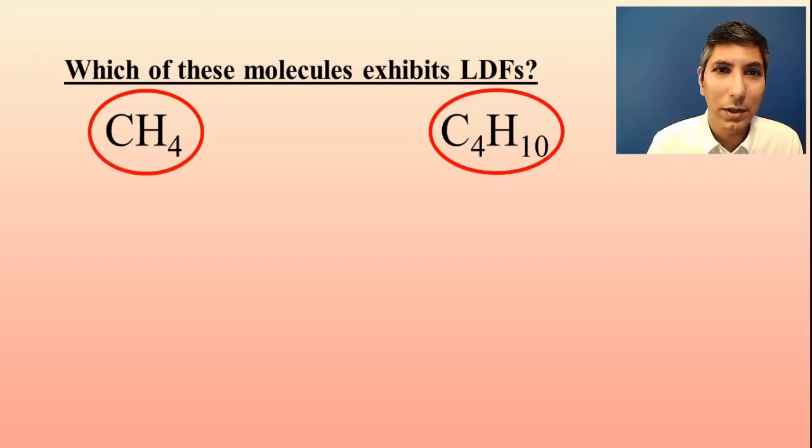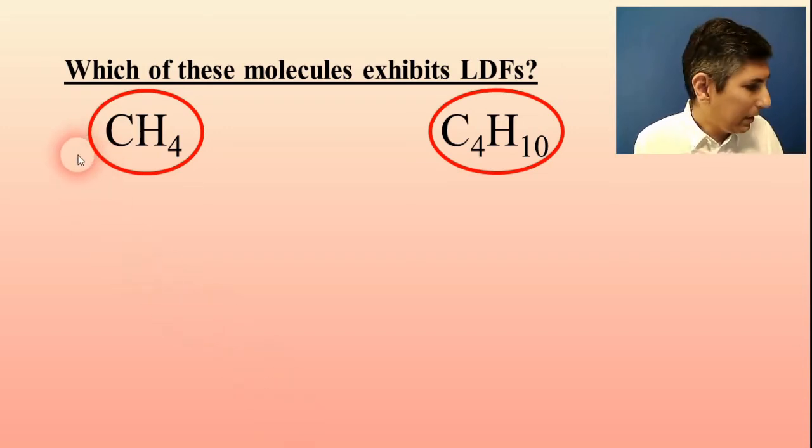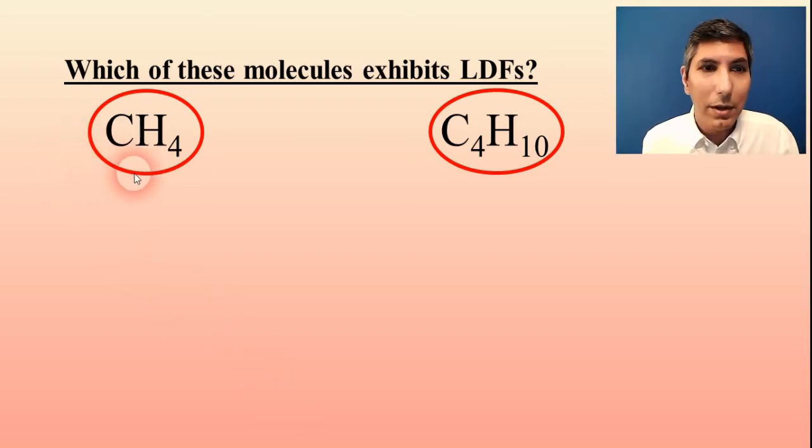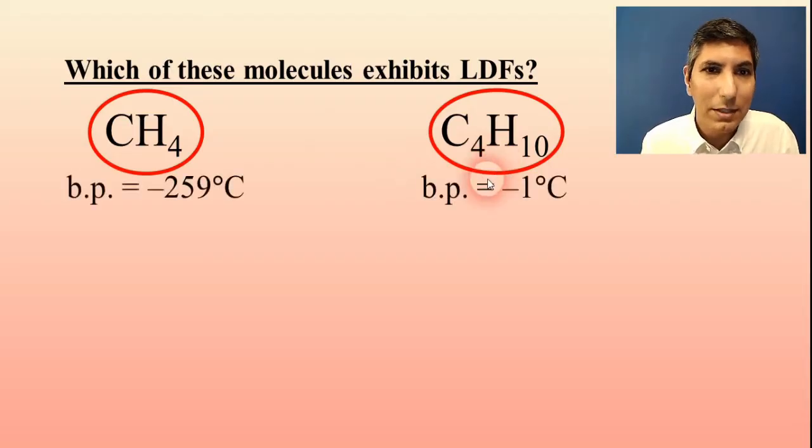Now, what if I were to ask which one exhibits stronger London dispersion forces? Now, that's something that you can figure out. Whichever one has more electrons. And you can actually look at the periodic table and you can add these up, but I think most of you can probably eyeball this and see that this butane molecule here, C4H10, is going to have more electrons than the methane molecule, CH4. And we can confirm this by looking at the boiling points. We see that the boiling point of butane is well over 200 degrees Celsius higher than the boiling point of methane, because its London dispersion forces are incredibly weak.